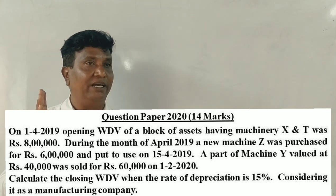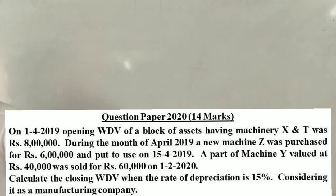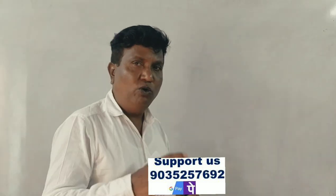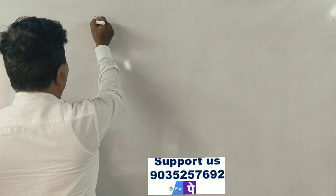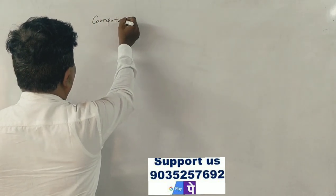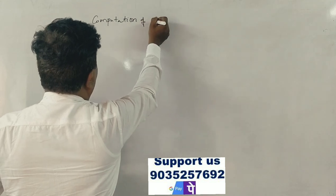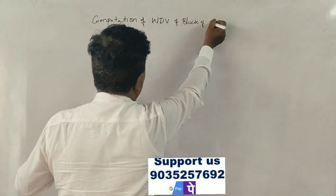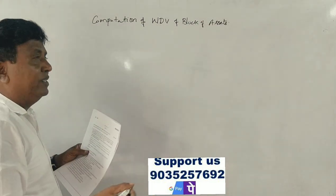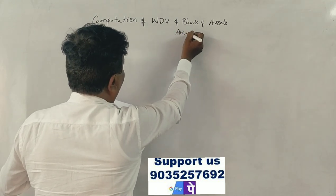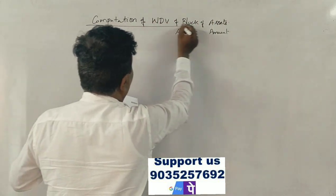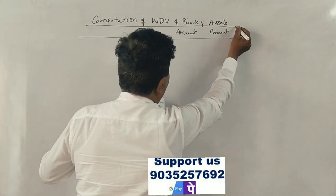Considering it as a manufacturing company — you got the question. Now you are writing the model answer. In the previous one, computation of written down value of block of assets.